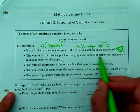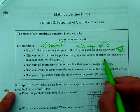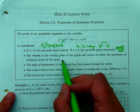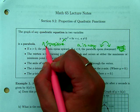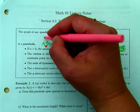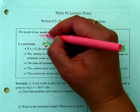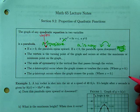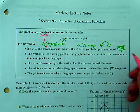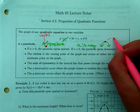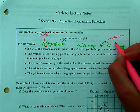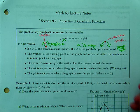The vertex is the turning point of the graph, and it occurs either at a maximum or a minimum point. If a is positive, this vertex would be the minimum point. Whereas if a is negative, this vertex would be a maximum point.